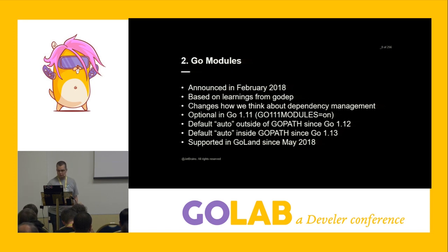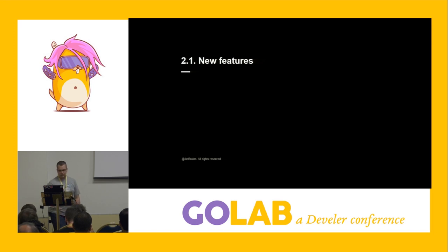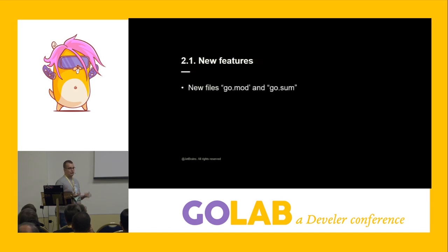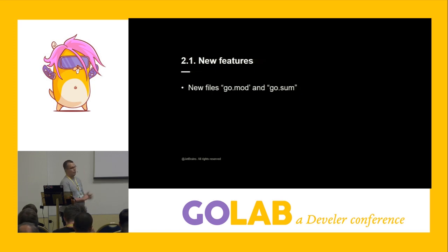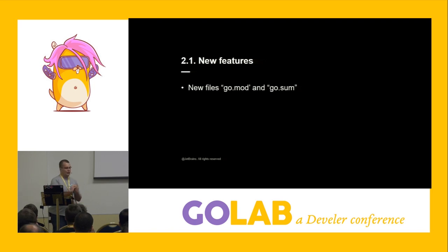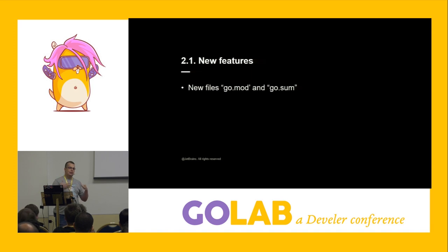Go modules was supported in GoLand since May 2018. The new features introduce two files you've probably seen starting to show up in repositories: the go.mod file and go.sum. Go.mod is a list of dependencies that your project directly depends on — you'll see both the name of the module itself, what it requires as dependencies, and their versions.